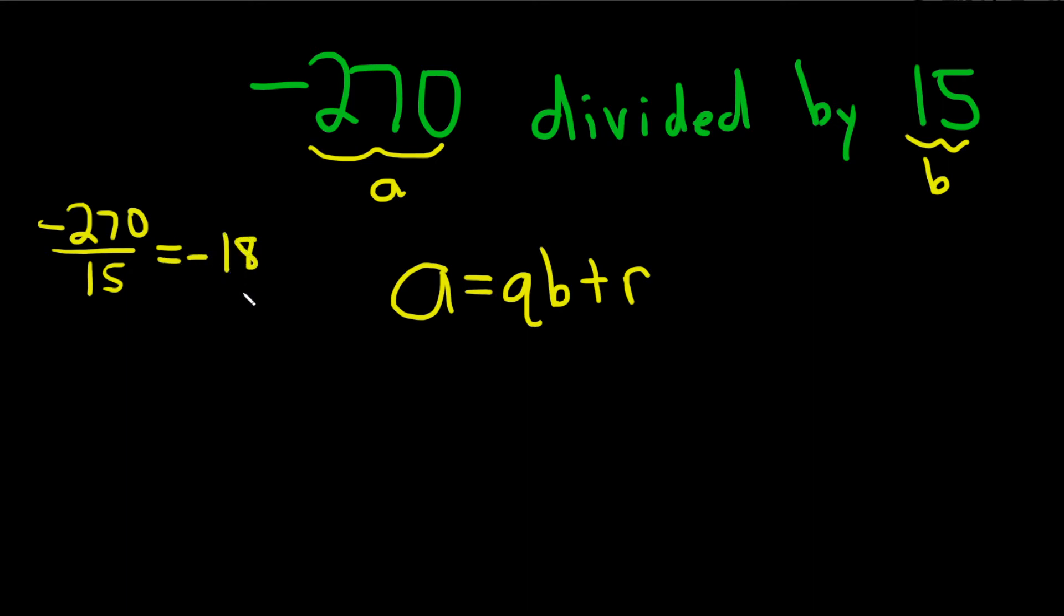So because we got a whole number, we're done. The quotient is negative 18, the remainder is zero. We don't have to do anything else because we got a whole number. If you don't get a whole number, you round down. That's how you get your quotient, and then you plug everything in.